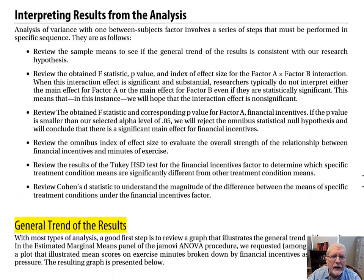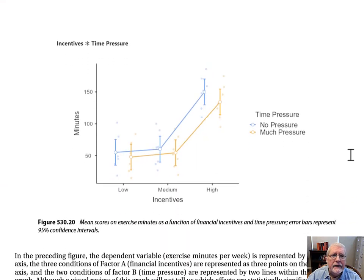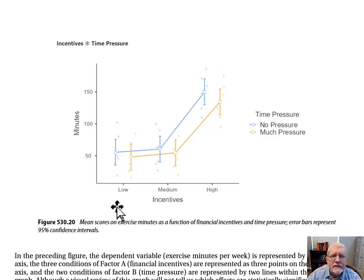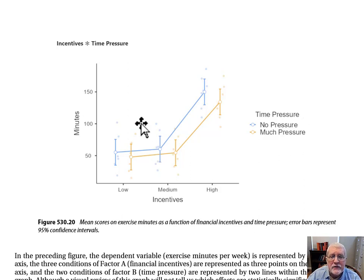Scrolling down to page 39, we have the section headed 'General Trend of the Results.' On page 40, here's a figure that does a good job of illustrating not only our research design but also the results we obtained. The dependent variable is minutes of exercise per week. Points on the x-axis represent Factor A, financial incentives — low, medium, or high incentive condition. The two different lines within the body of the figure reflect Factor B, time pressure. The blue line represents people under no time pressure; the gold line represents those under much time pressure.